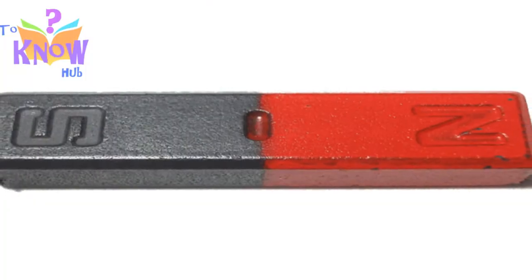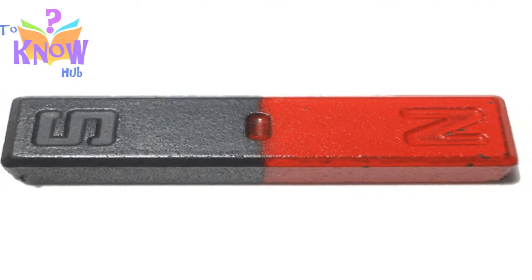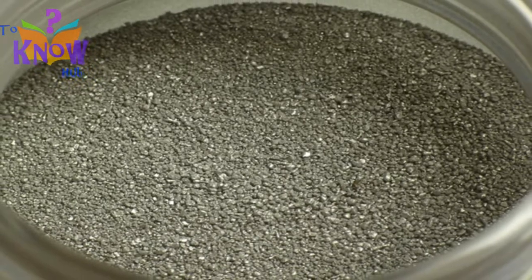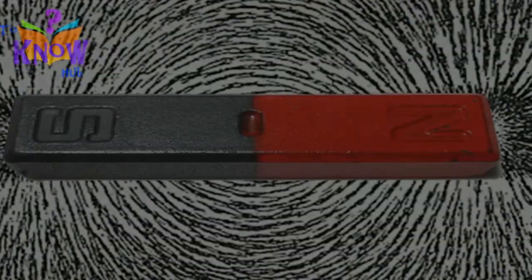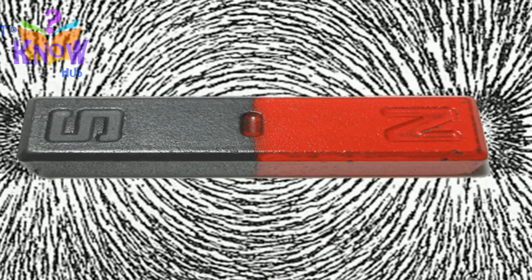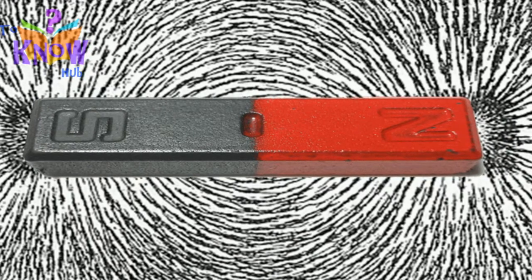We take a bar magnet and keep it in the middle of a drawing board. Then we sprinkle some iron powder around it and tap the board gently. The iron powder would create a pattern similar to this. This pattern really has deep significance.